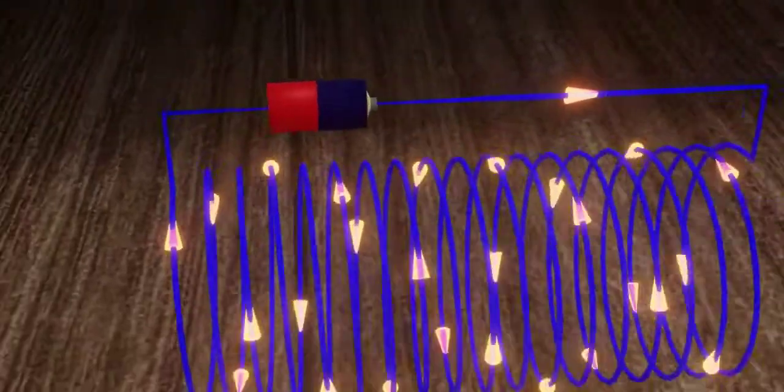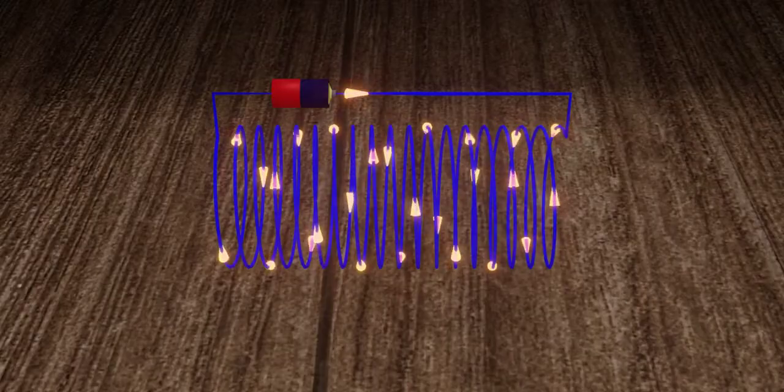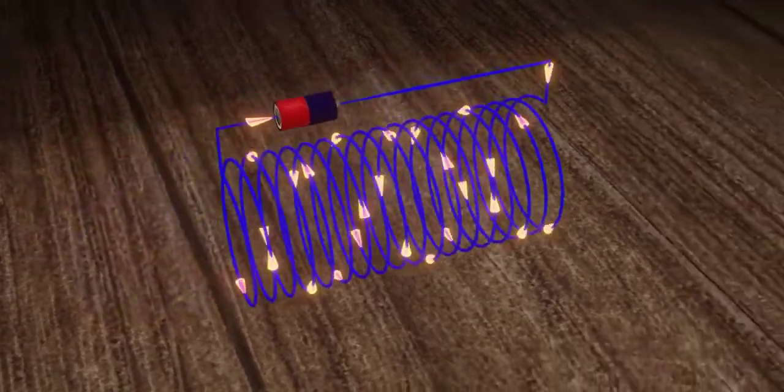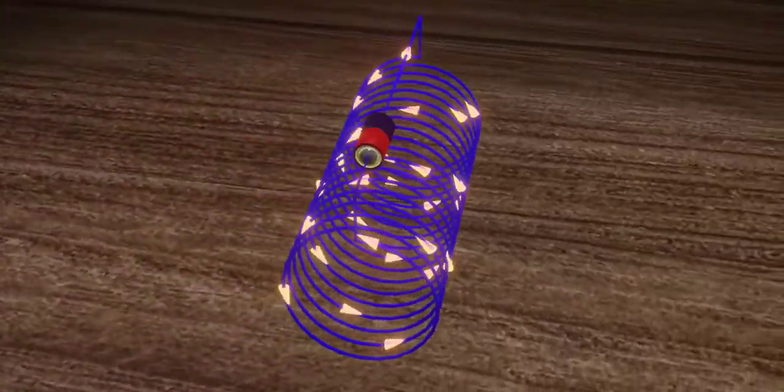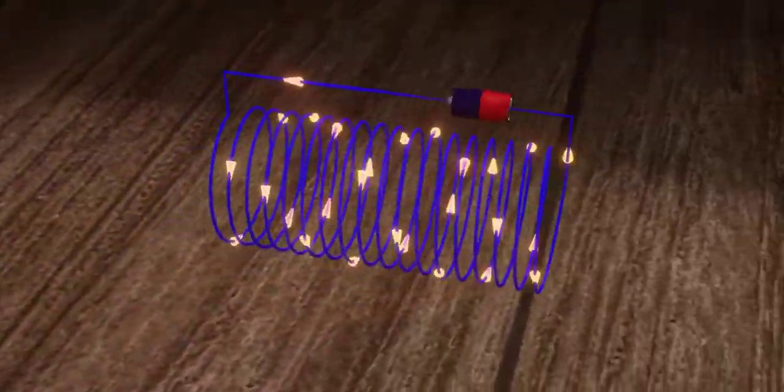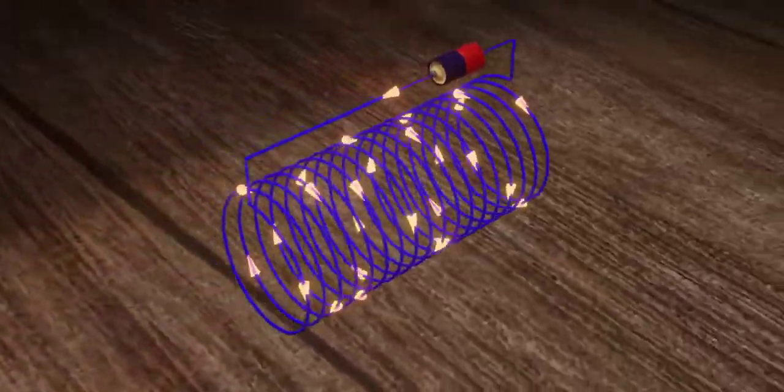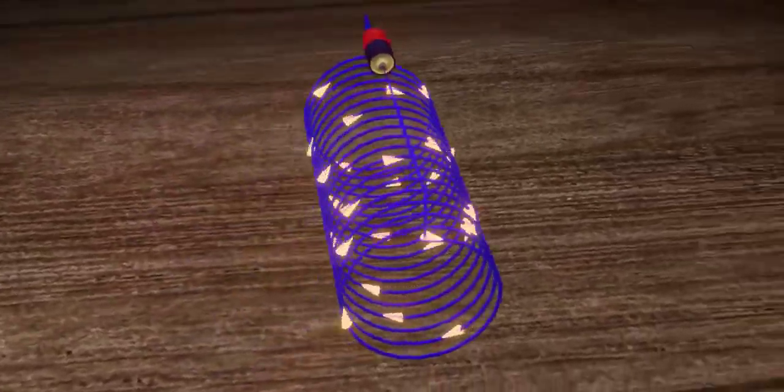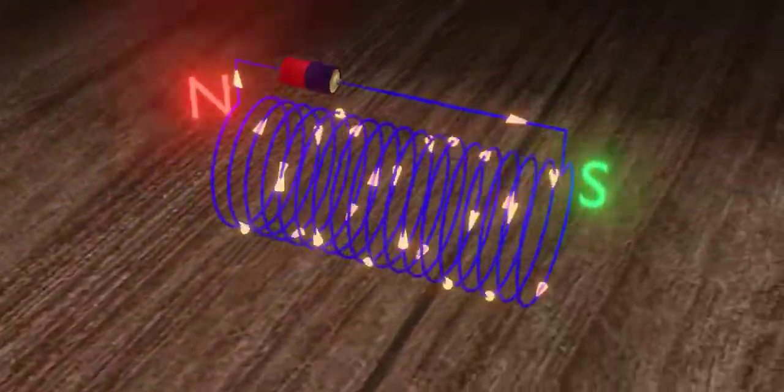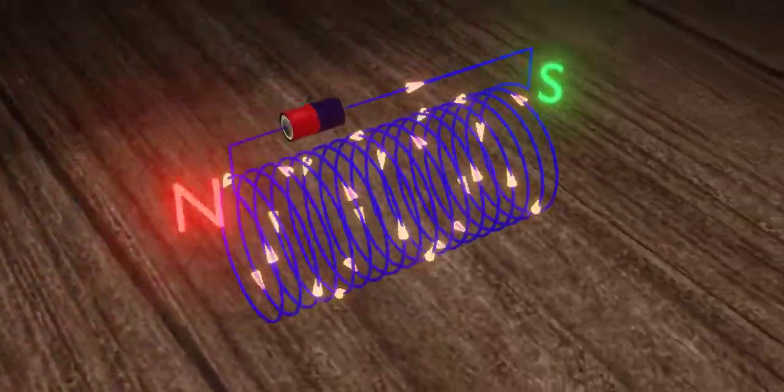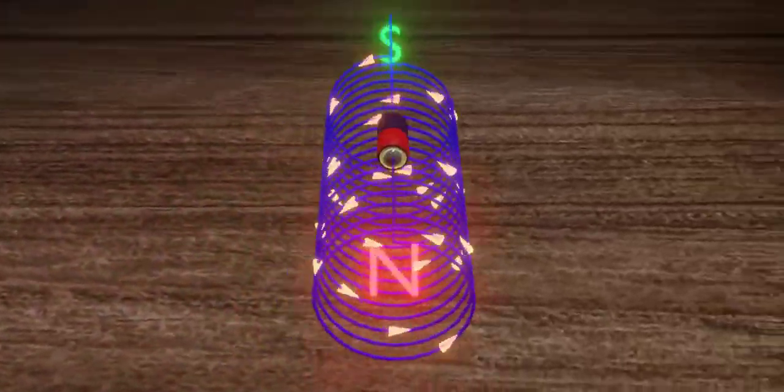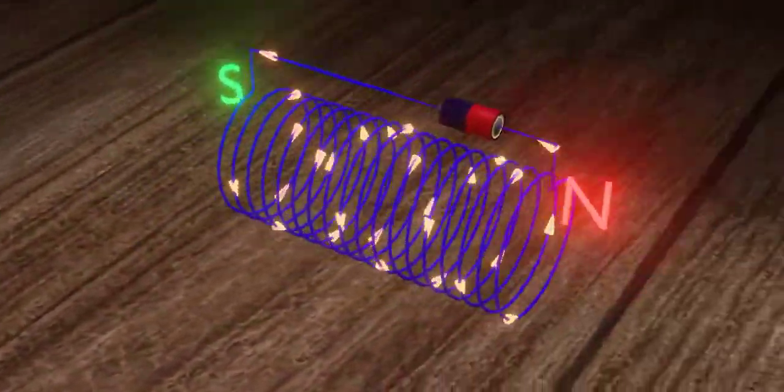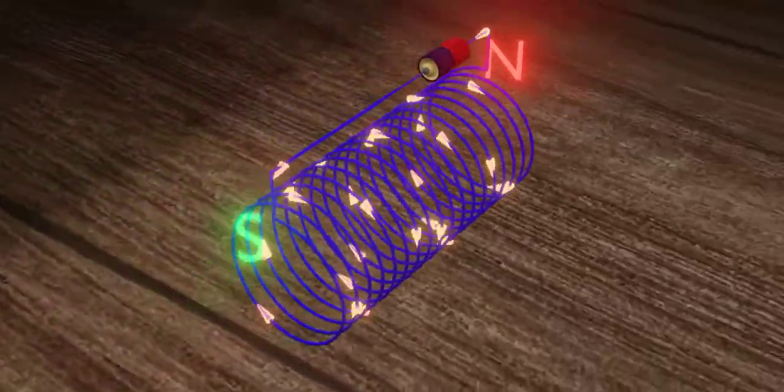In a current carrying solenoid, from one end of the solenoid, the current may appear to be revolved in an anti-clockwise direction. And from the other end, the current should be in clockwise rotation. The side from which the current is anti-clockwise is the north pole of the solenoid. And the side from which the current is clockwise, there is the south pole of the solenoid.